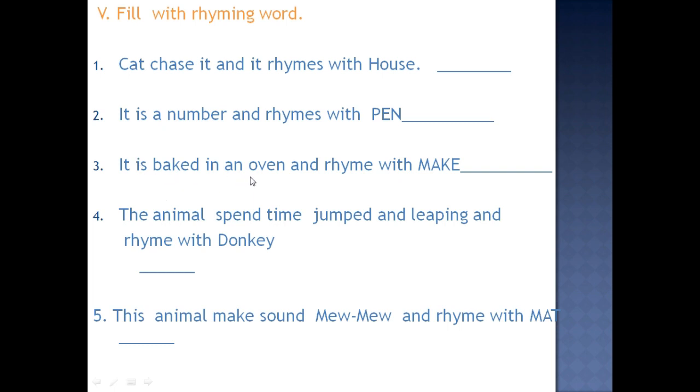It is baked in an oven and rhymes with make. So what do we bake in an oven? Yes, cake. The animal spent time jumping and leaping and rhymes with donkey. So which animal? And the rhyme for donkey is? Yes, monkey. Does monkey jump? Yes, monkey. The animal makes sound meow, meow, meow and rhymes with mat. So which animal will sound meow, meow? Yes, very good. It is a cat. So cat and rhymes with mat. Mat. Mat rhymes with cat. Very good.